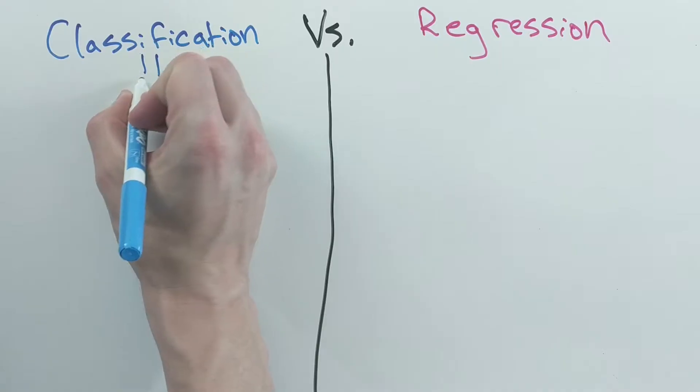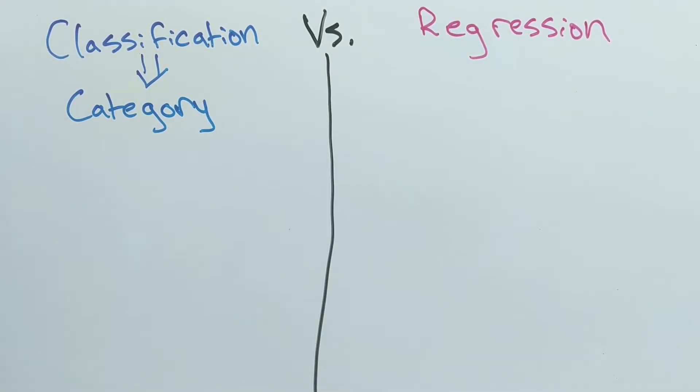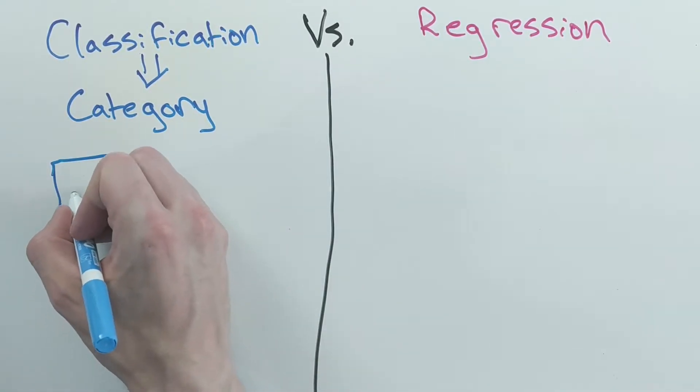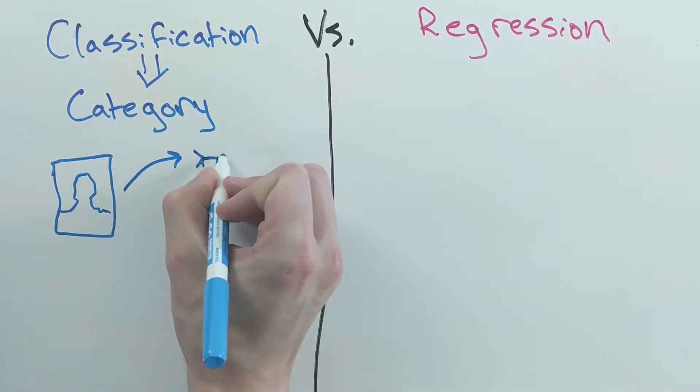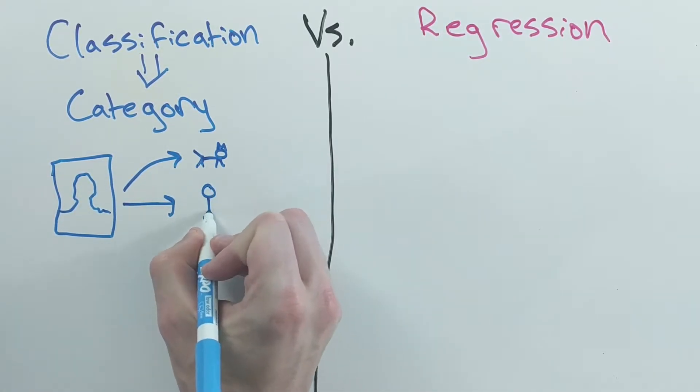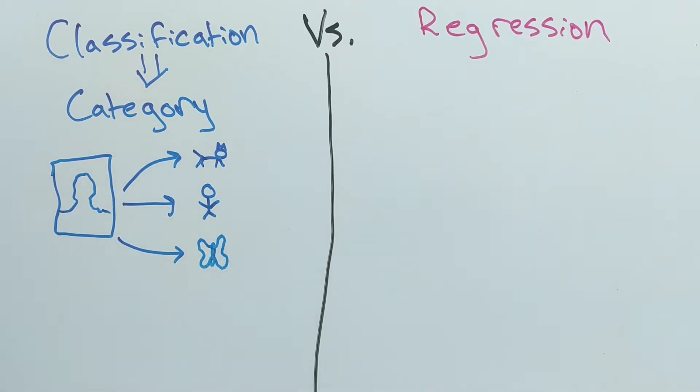Classification problems are problems where you're trying to predict what category your data belongs to. For example, if you were trying to predict if a picture is of a cat, a person, or a butterfly, that would be a classification problem.